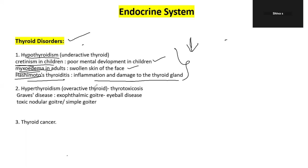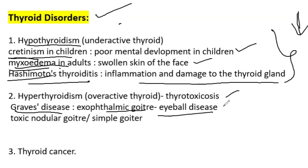Hyperthyroidism means overactive thyroid with elevated T3 and T4. This includes thyrotoxicosis and Graves' disease — also called exophthalmic goiter — where the eyeballs protrude. Other causes include toxic nodular goiter and simple goiter with inflammation. Thyroid cancer is also a thyroid gland condition.